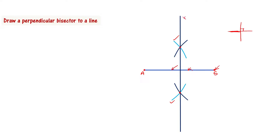If I call this line XY, then XY is perpendicular to AB. The intersection point O gives AO equal to OB — that's the midpoint. That is why it is called the perpendicular bisector. We will now use this same concept to construct the tangent to the circle.